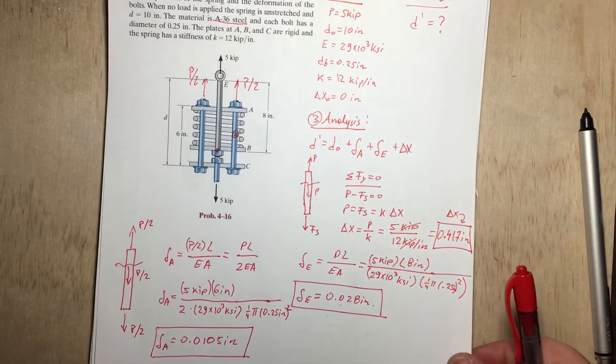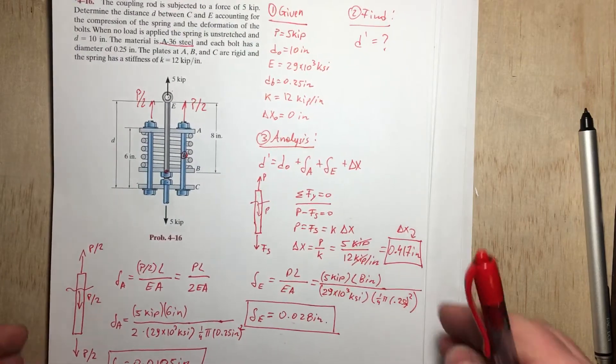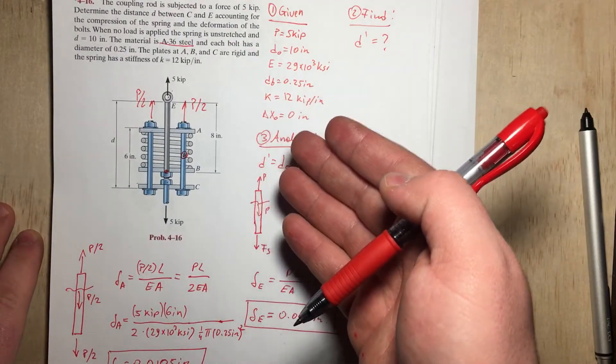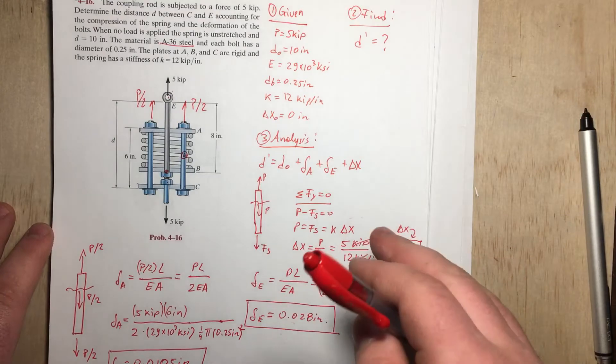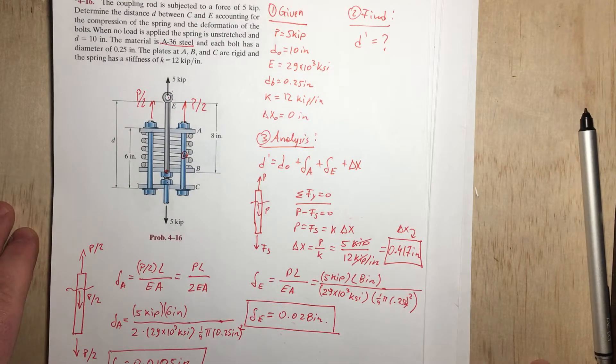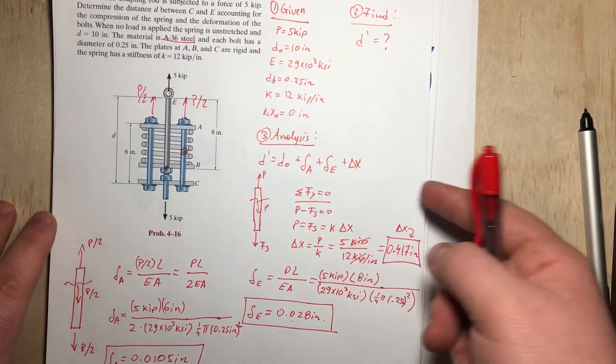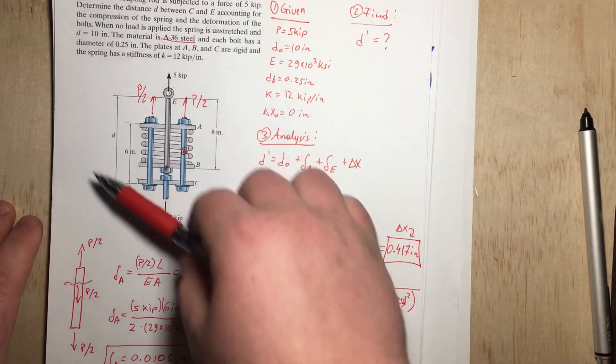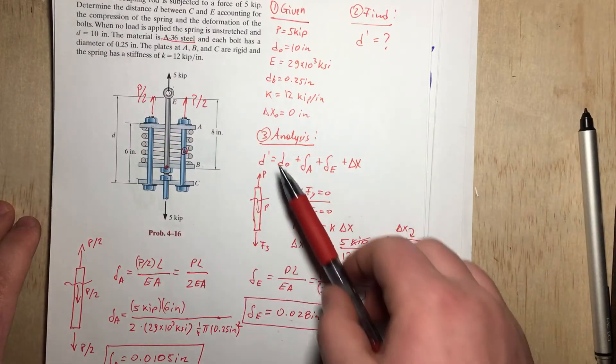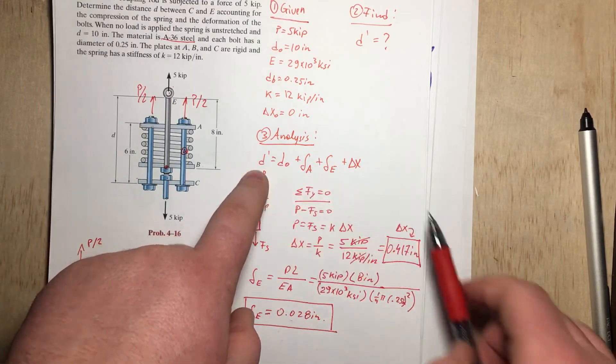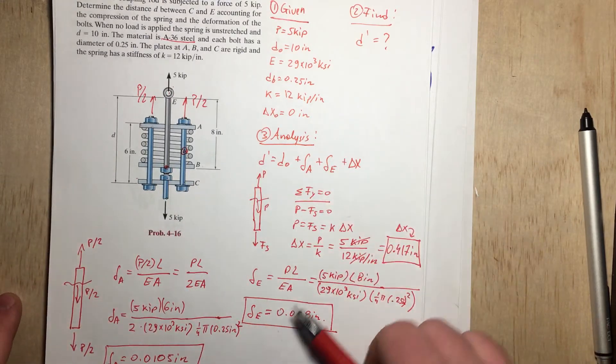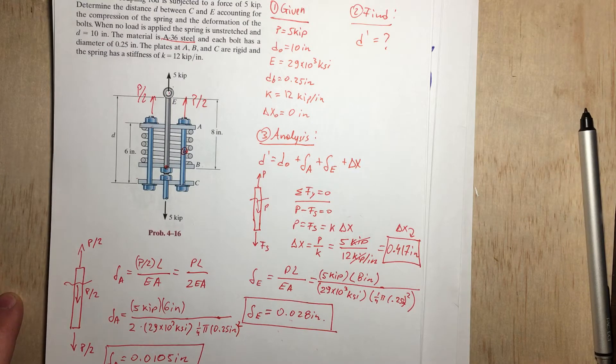So again, simply using the method we use on every problem, we always start by reading the problem carefully and writing down what is given. Always, that is the first step and the most important step, I would say. Then we need to look at what we need to find. Once we know what's given and what we need to find, all we need to do is come up with a relationship between the two. So basically by looking at the picture, analyzing it, we were able to find this formula, which will give us the answer. And then from there on is basically just applying our physics knowledge. All right, so thank you for watching, and please let me know if you have any questions, and have a great day. Thank you.